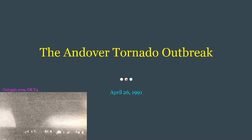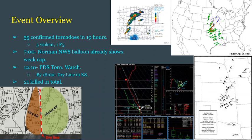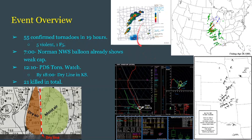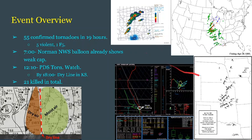This video is going to be on the Andover tornado outbreak that occurred in Kansas on April 26th, 1991. A violent tornado that will be noted here is the Oluga area, Oklahoma F4 pictured here — that tornado was a wedge and had a surprisingly brief touchdown but did devastate the Oluga area. Starting with the overview, there's a GIF here causing some laser pointer issues and low FPS. Anyway, there were 55 confirmed tornadoes in just 19 hours.